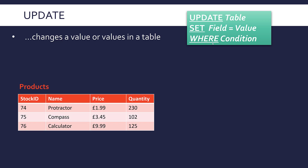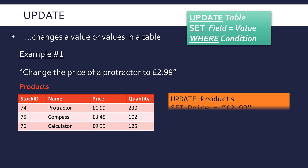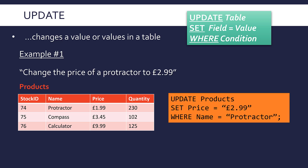Let's use a table I've used before called 'products'. I've currently got three products and four fields. Let's say I want to change the price of a protractor to £2.99 — how would I do this? Well, first of all I'd write UPDATE and then the table name, which is 'products'.